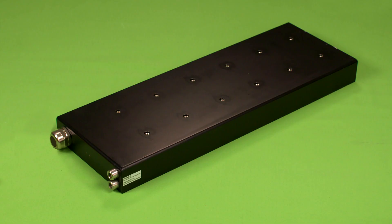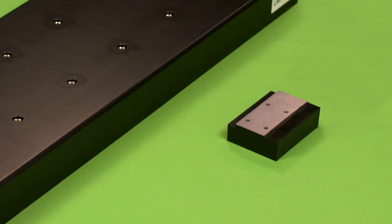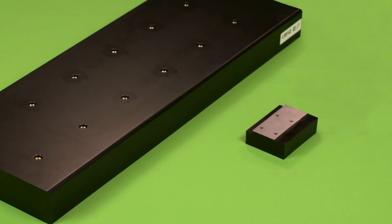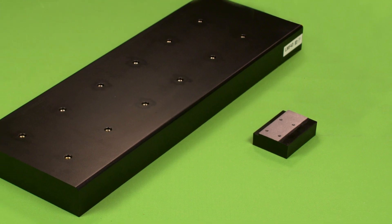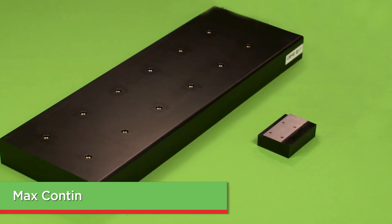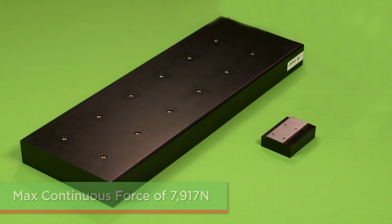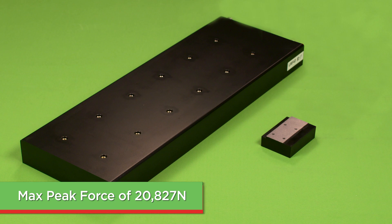To increase the range of force, Hiwin offers the LMFA, which is a water-cooled version of the iron core motor. By drawing the heat out of the motor using a water-cooled system, the continuous force and peak force increase, giving the LMFA series a max continuous force of 7917 newtons and a max peak force of 20827 newtons.